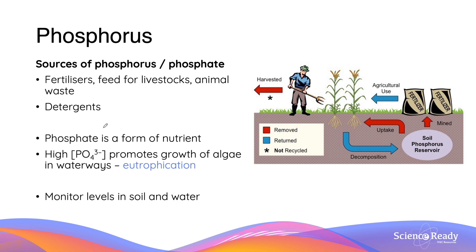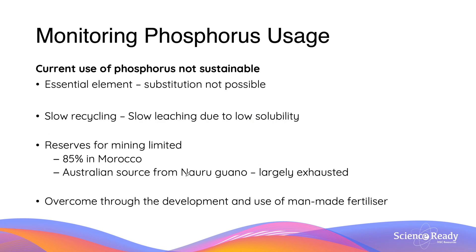Phosphate is also a type of nutrient, like nitrogen, for the promotion of algal growth in waterways — that is called eutrophication. Because of the low solubility of phosphorus and slow leaching from inorganic substances, our current use of phosphorus is rather unsustainable. 85% of our reserves come from the guano reserve which makes up the land form in Nauru, but this has since been largely exhausted — and guano is essentially bird dung. We have been overcoming this through man-made fertilizers, but the result has been an increase in the rate of phosphate cycling by up to four times, and thus the number of point source phosphate releases and eutrophication has similarly increased.